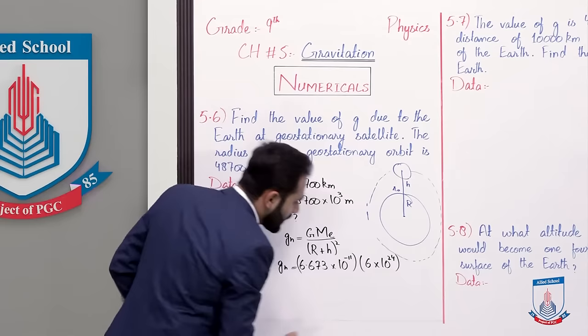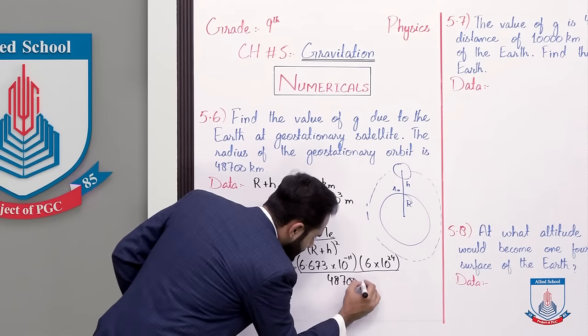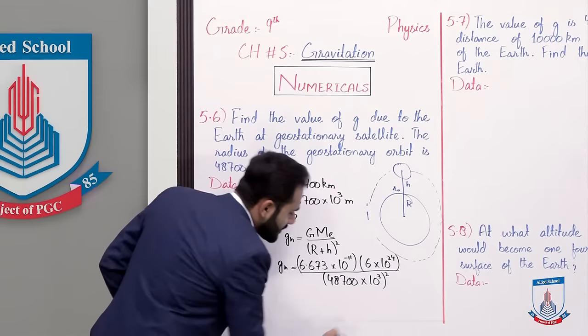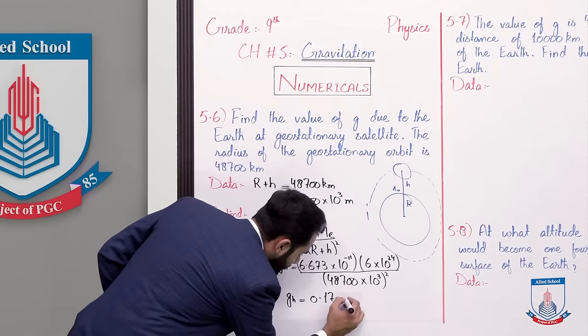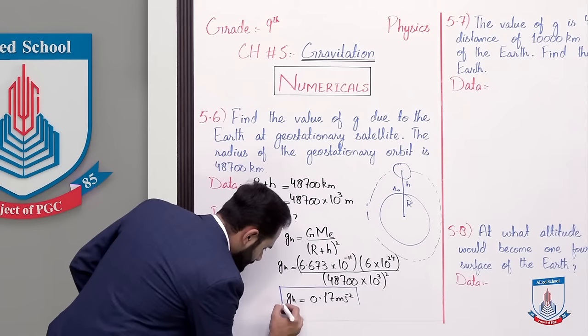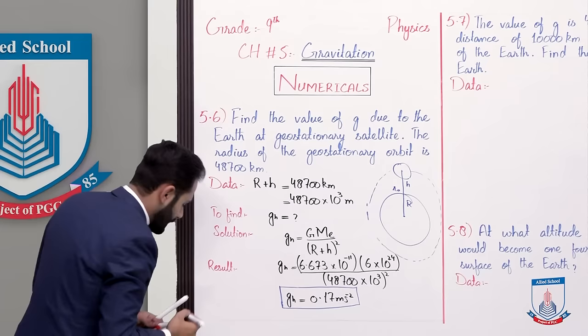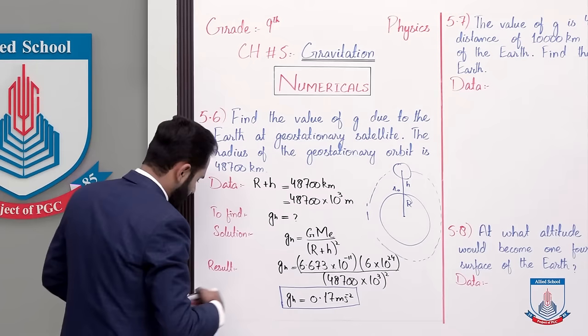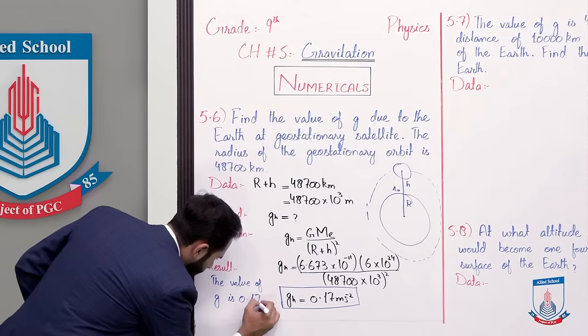Divided by (r plus h), that is 48,700 multiplied by 10 to the power 3, and since there is a square, we take its square as well. When we solve this, the final answer is 0.17 meter per second squared. The value of g is 0.17 meter per second squared.